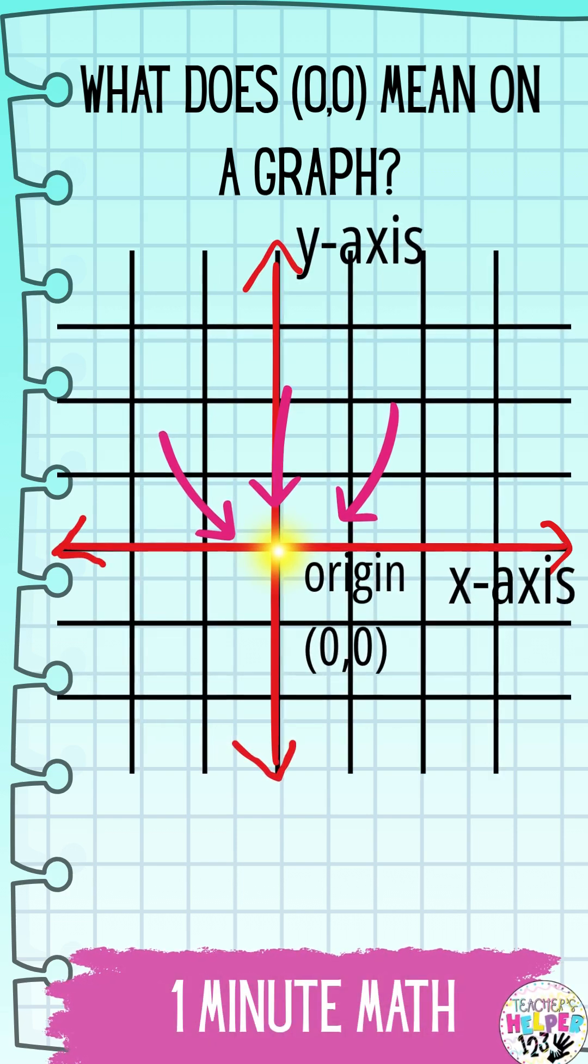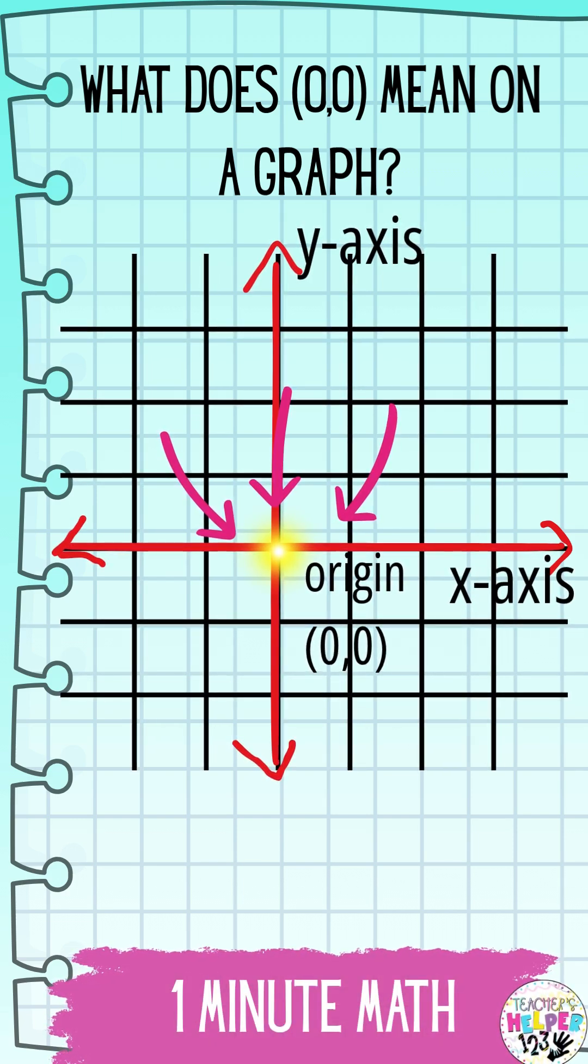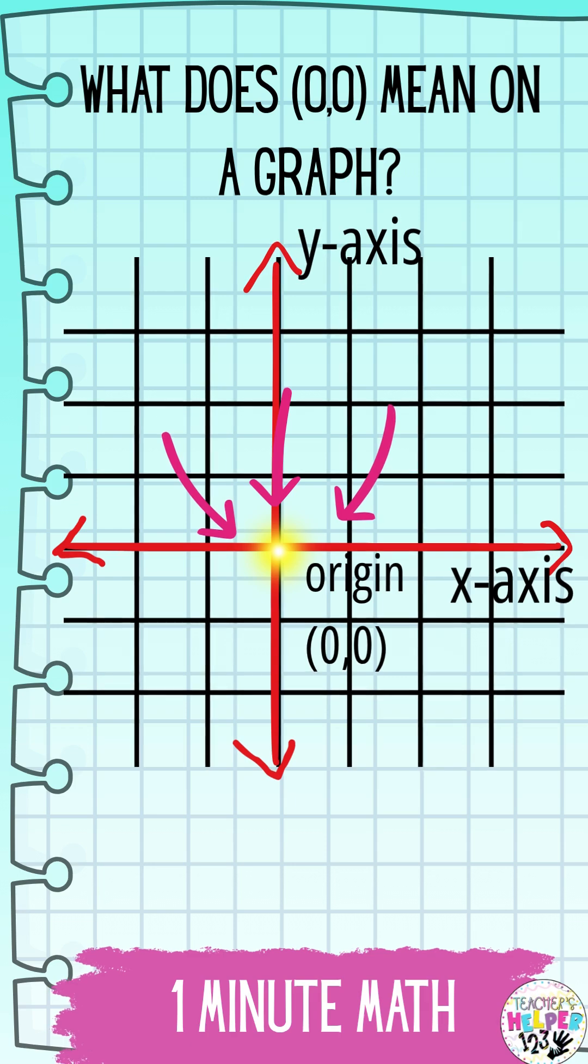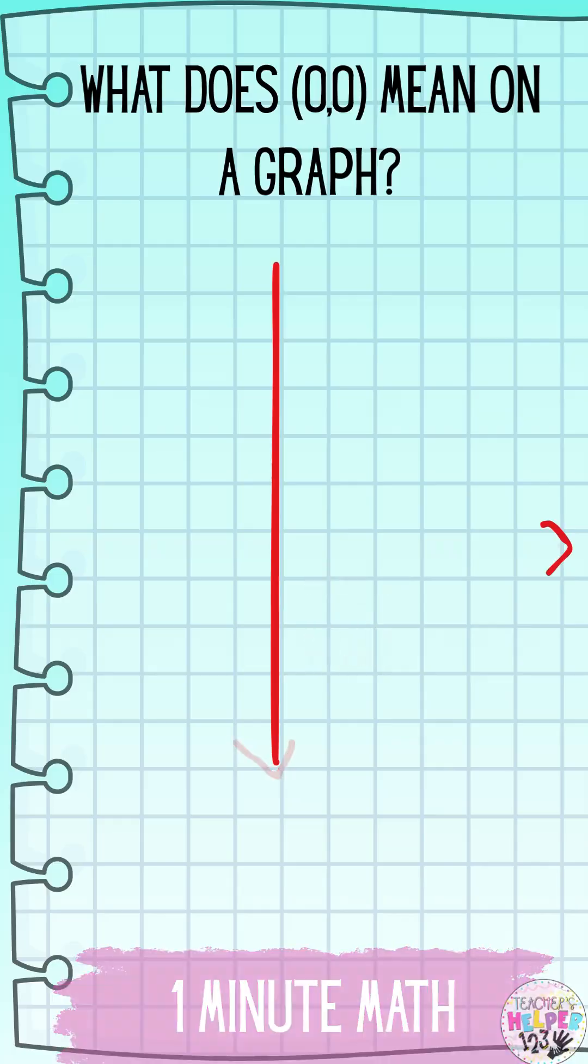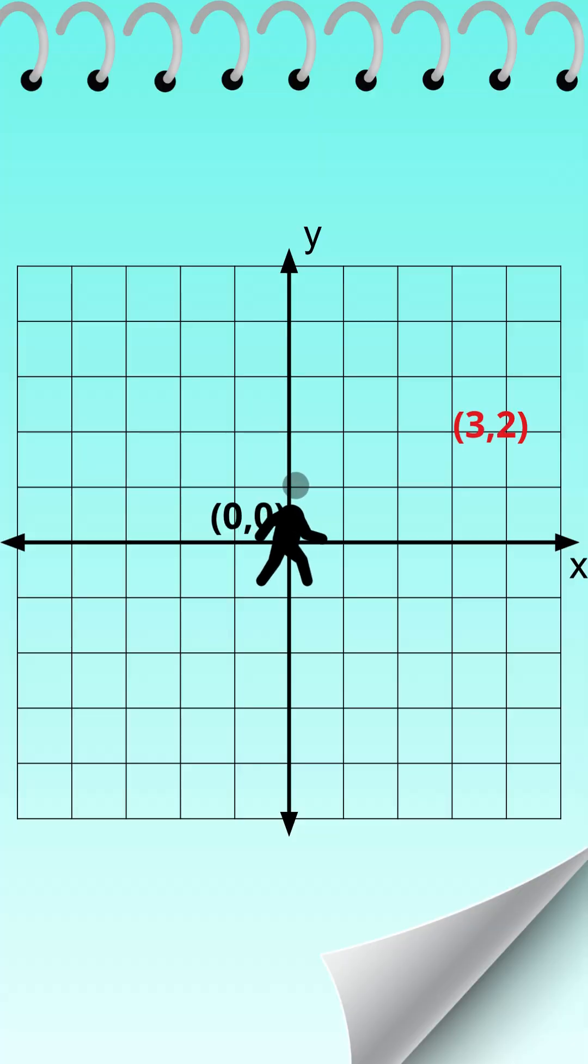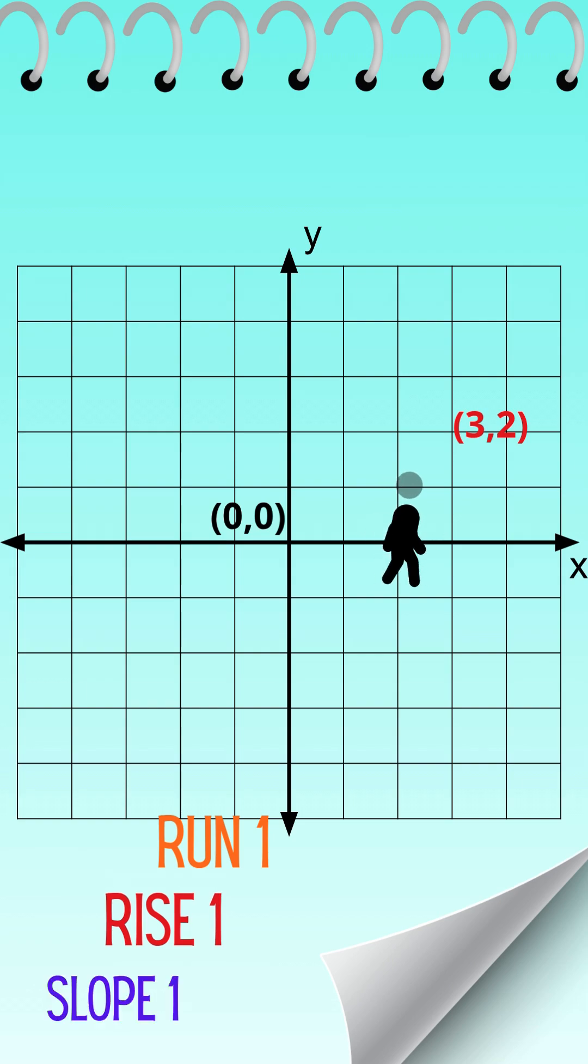From here, we can move right or left on the x-axis, and up or down on the y-axis to plot points. Each point is written as an ordered pair like (3,2), where 3 tells us how far to move on the x-axis and 2 tells us how far to move on the y-axis.